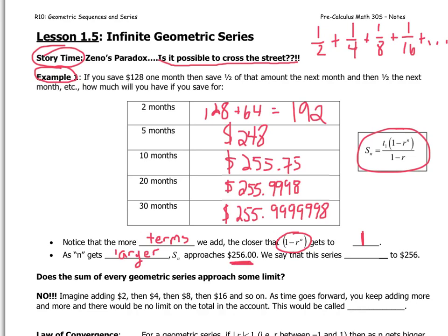You know, try n equals 1,000 months, and you'll get really close to 256. And so we say that this series converges to $256.